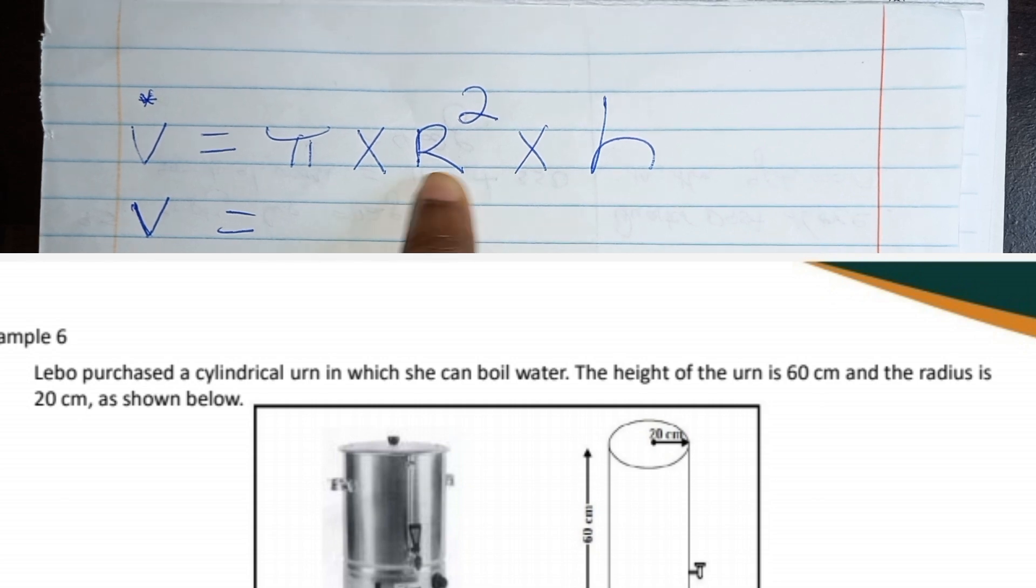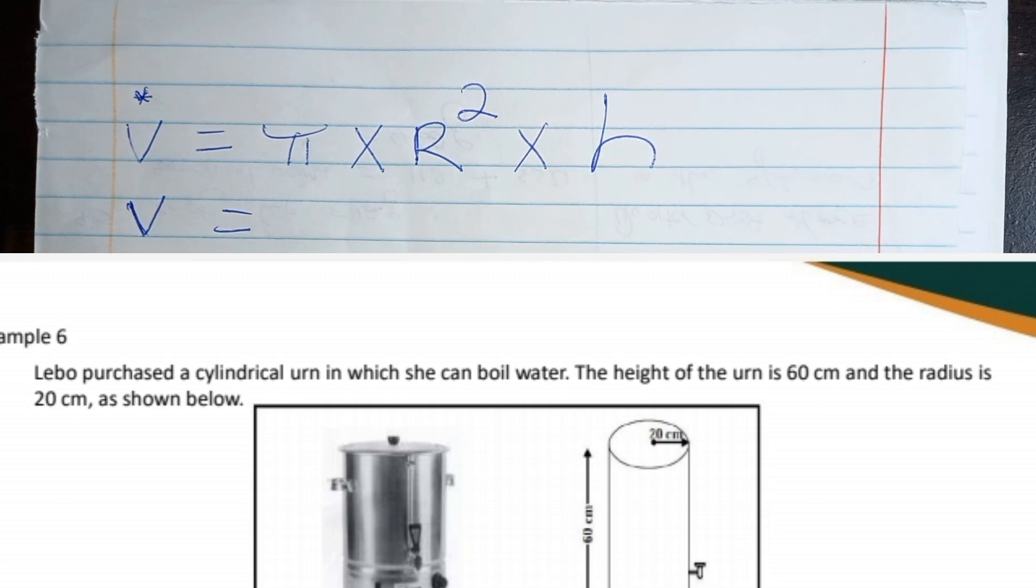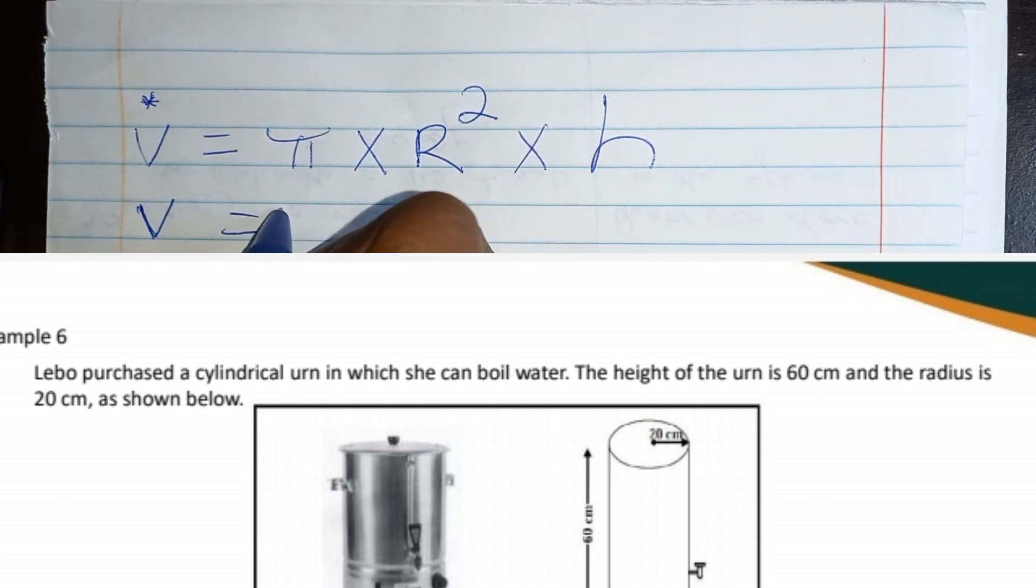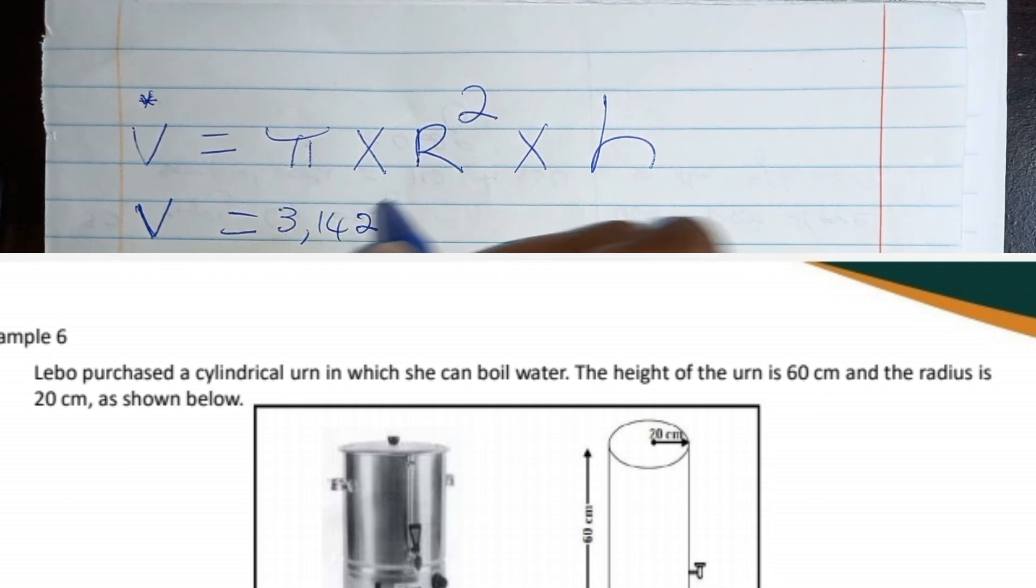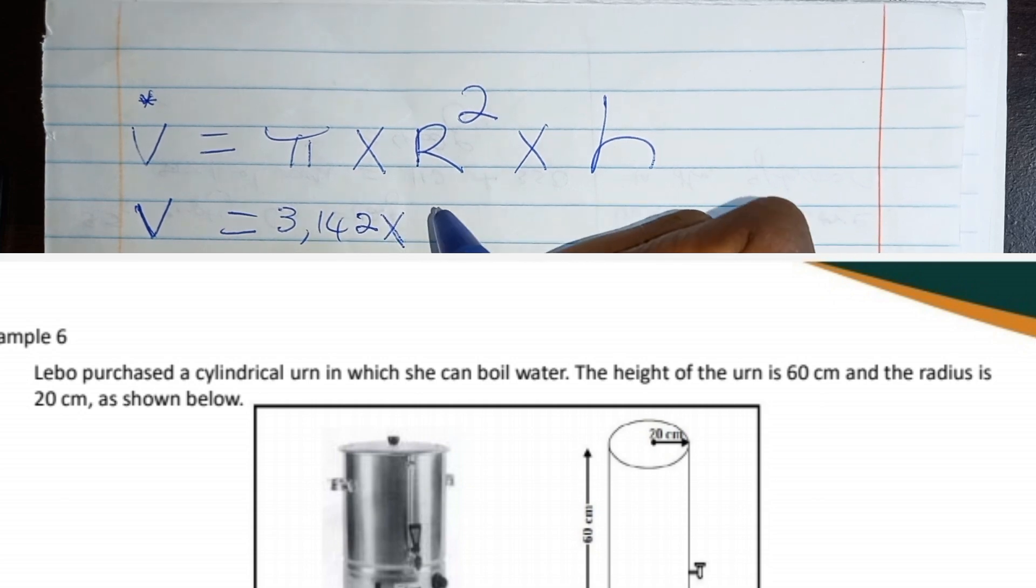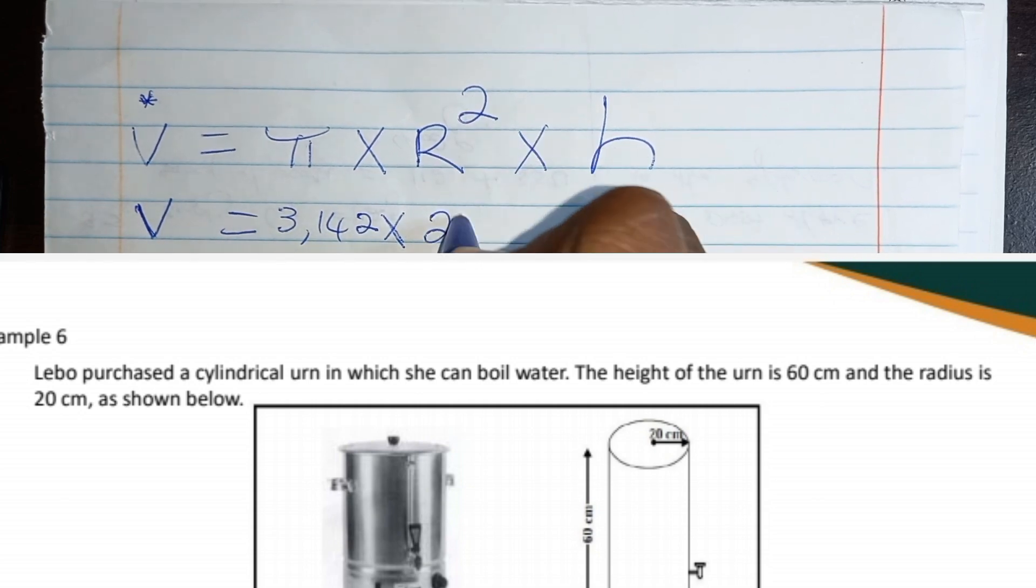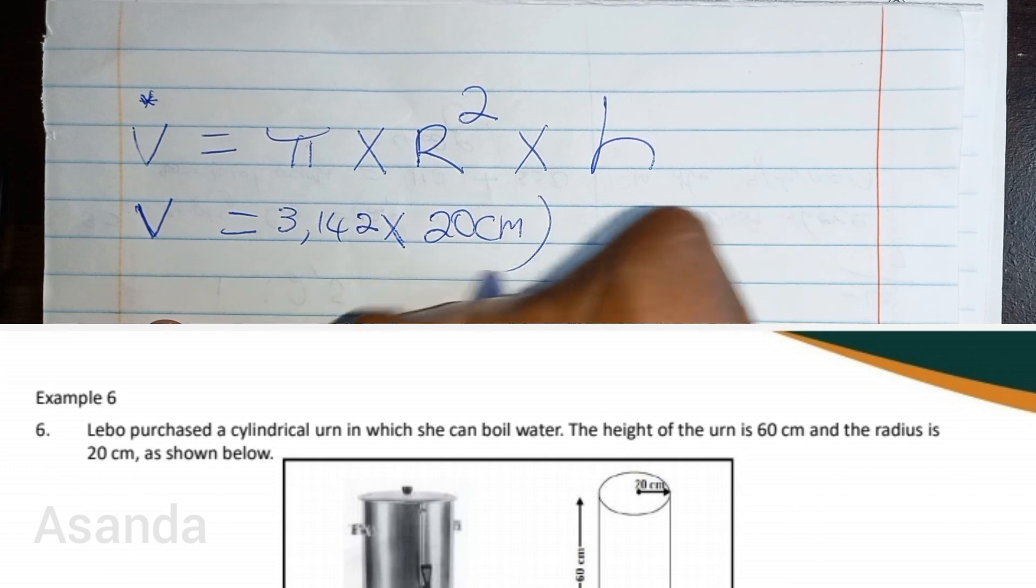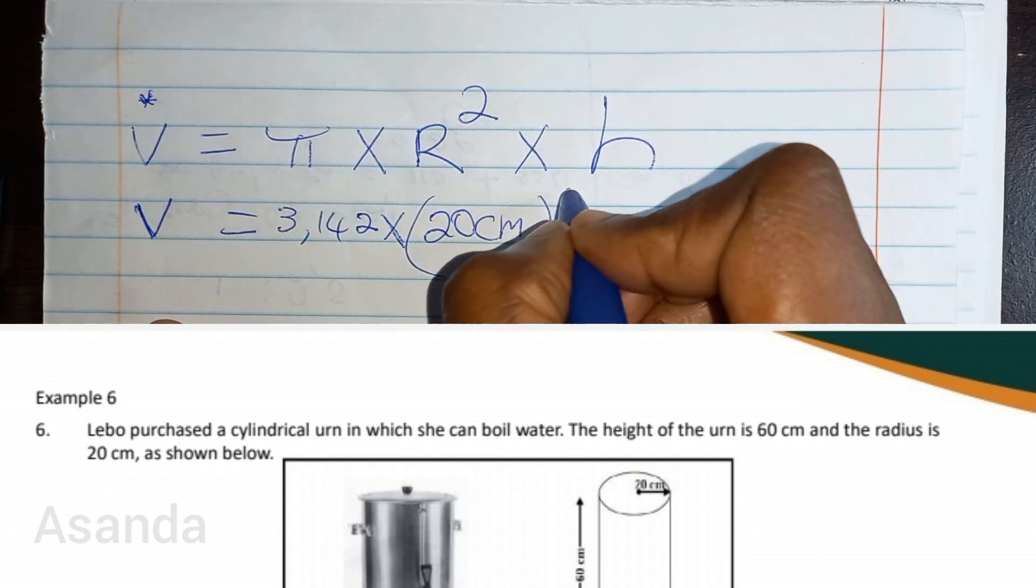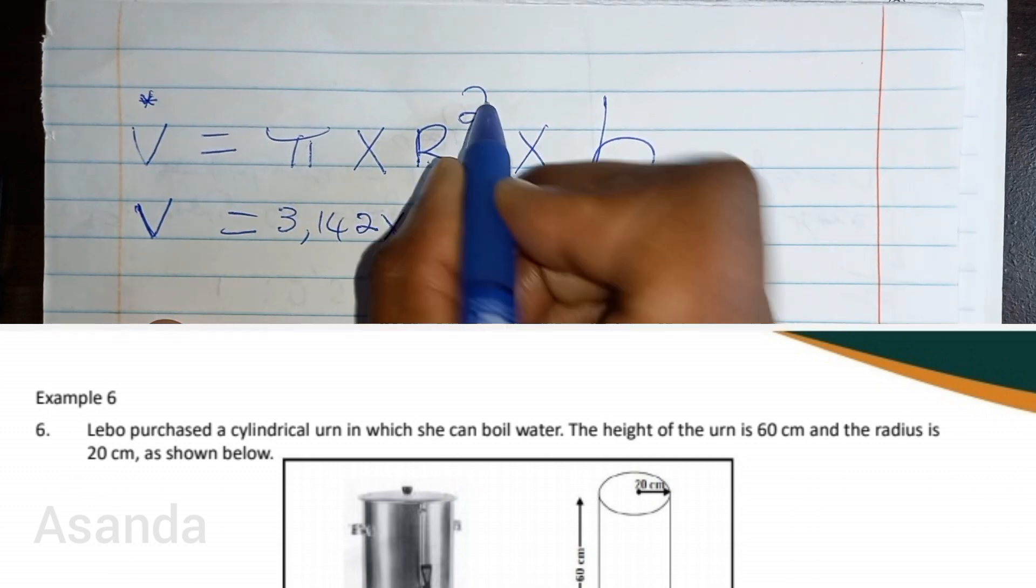I have radius in centimeters and height in centimeters, so I'm good to go. 3.142 multiplied by radius, which is 20 centimeters, and that is squared because it says radius squared.